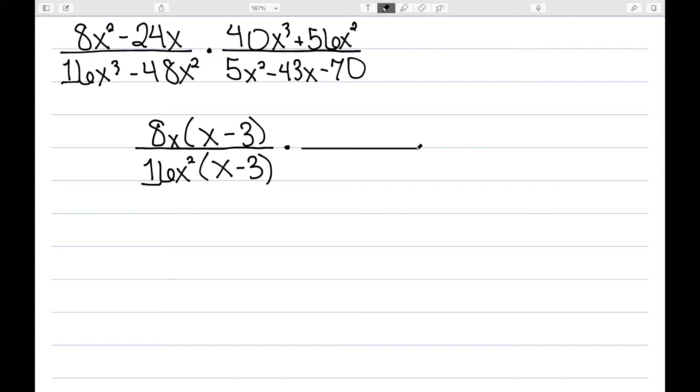If I look at the right-hand side, 40x cubed and 56x squared, well, those have an 8x squared in common. When I remove that, I'm left with 5x plus 7.